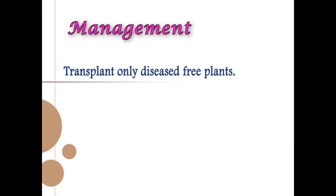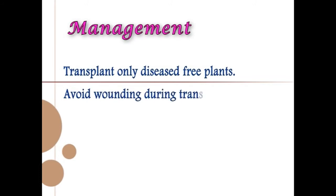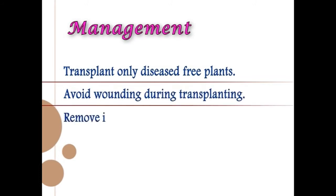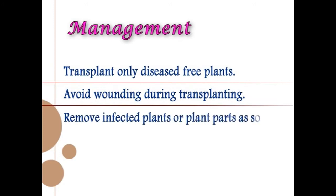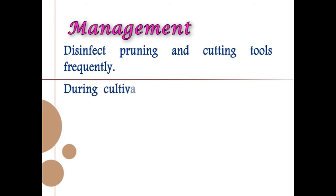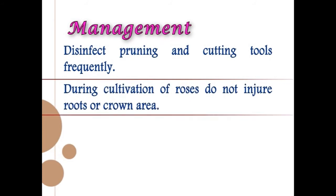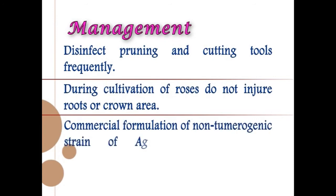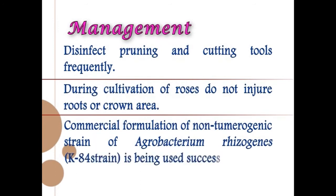For management of crown gall, transplant only disease-free plants. Avoid wounding during transplanting. Remove infected plants or plant parts as soon as galls are observed. Disinfect pruning and cutting tools frequently. During cultivation, do not injure roots or the crown area. The commercial formulation of the non-tumorigenic strain of Agrobacterium radiobacter, the K84 strain, is being used successfully.